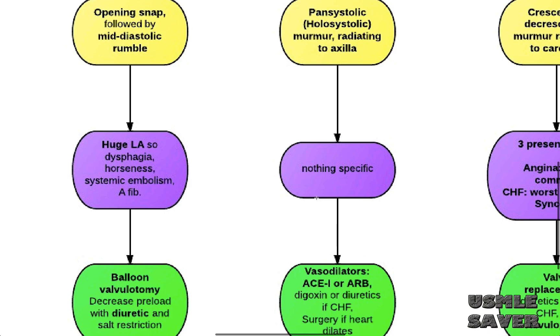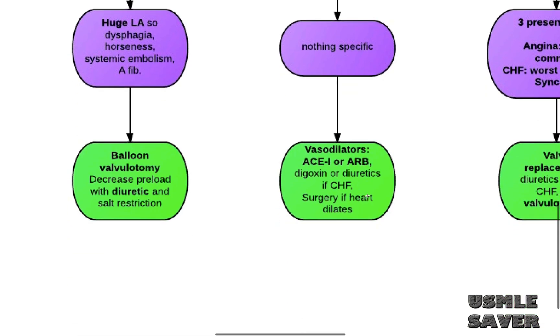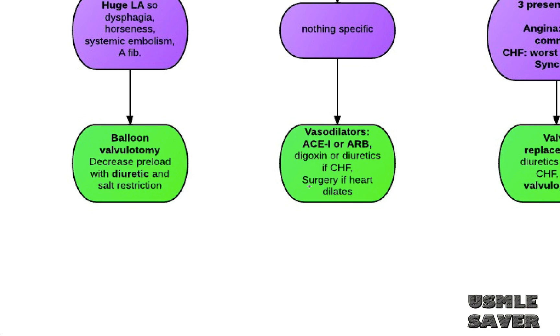Here, patients don't get any specific symptoms. You treat these patients with vasodilators. First line of drugs are ACE inhibitors or angiotensin receptor blockers. If these patients have CHF symptoms, you can also add diuretics. You want to make sure that patient gets surgery before heart starts to dilate, because once heart dilates, it is irreversible.